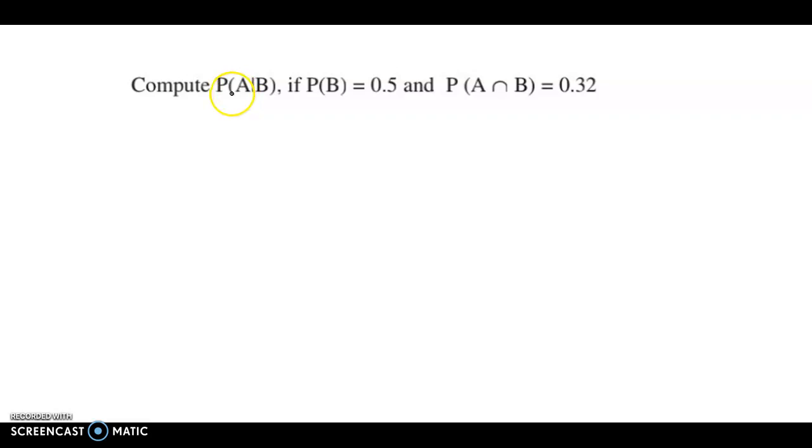Compute probability of A given B if probability of B is equal to 0.5 and probability of A intersection B is 0.32. So this question is based on conditional probability.